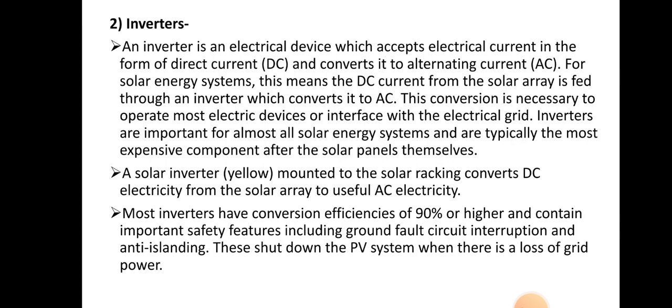After the solar panel, the inverter is the most expensive component in the solar photovoltaic system. The solar inverter, mounted to the solar racking, converts DC electricity from the solar array to useful AC electricity. Most inverters have a conversion efficiency of 90% or higher and contain important safety features including the ground fault circuit interface and anti-islanding, which shut down the PV system when there is a loss of grid power. In simple terms, the inverter converts DC current from the solar panel to AC current for home appliance circuits.